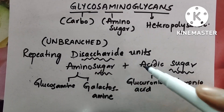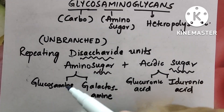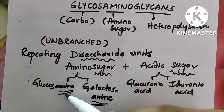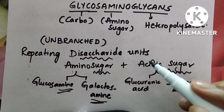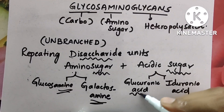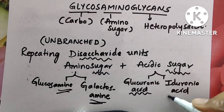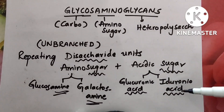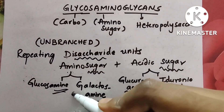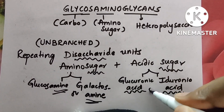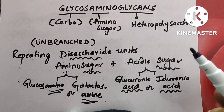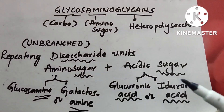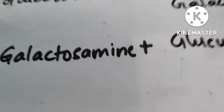Amino sugars are glucosamine or galactosamine, whereas acidic sugar is glucuronic acid or iduronic acid. The kind of questions you get from this topic ask either about the composition of the glycosaminoglycan or the structure in which it is present and its function. So you need to know the names, the composition, the important structure in which they are present, and their function.